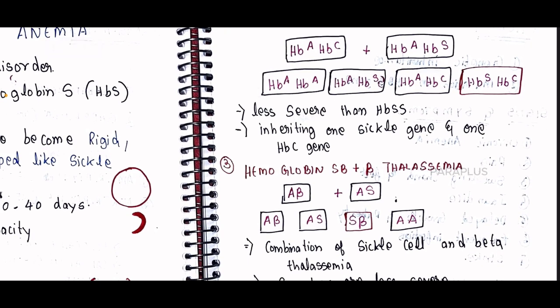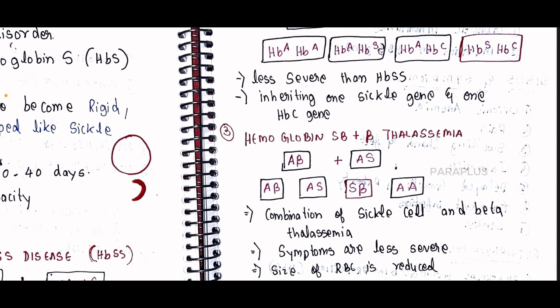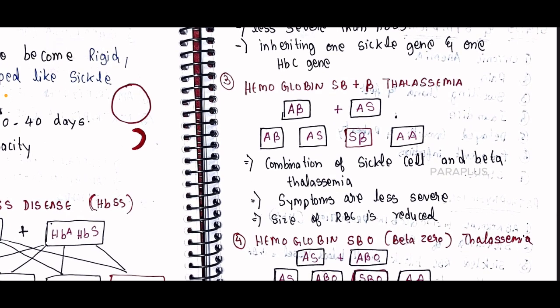Inheriting one sickle cell gene (S) and one HbC gene results in HbSC disease. If the mother has HbC and carries an S gene, the child will have less severe sickle cell anemia. There is also a type involving beta-thalassemia — HbS beta-thalassemia — where one parent has thalassemia trait and the other carries HbS.